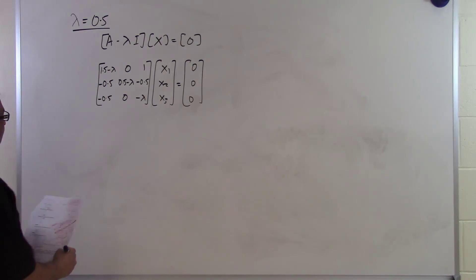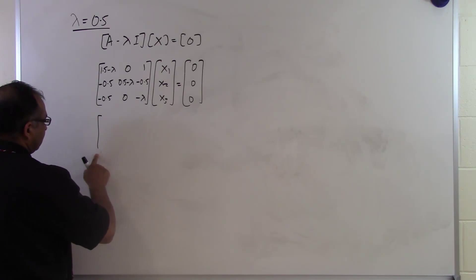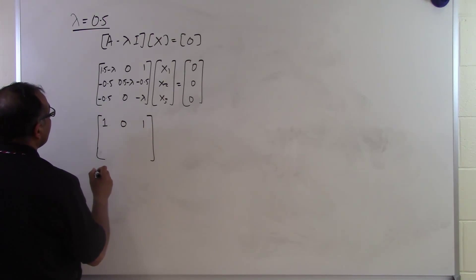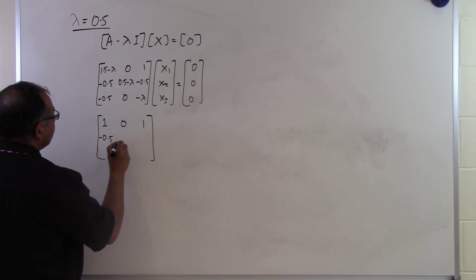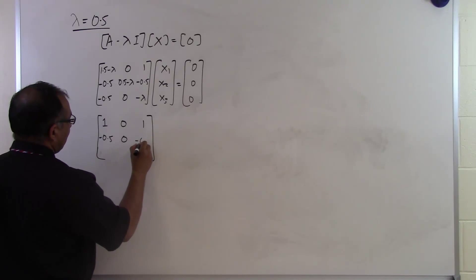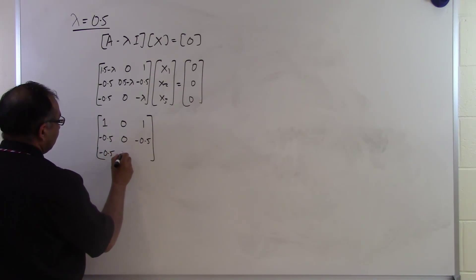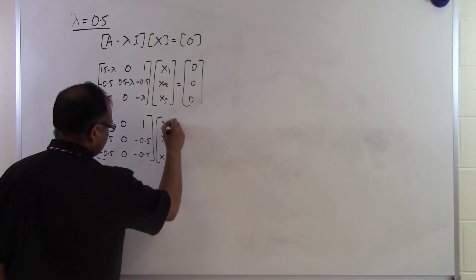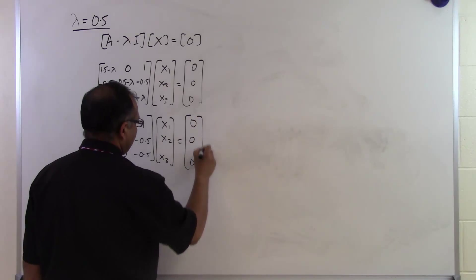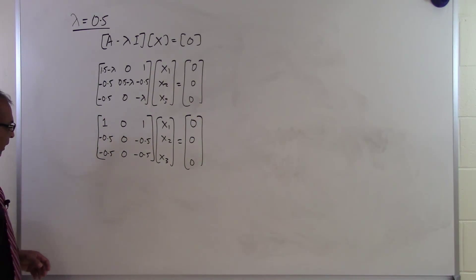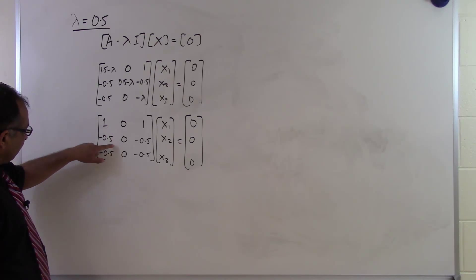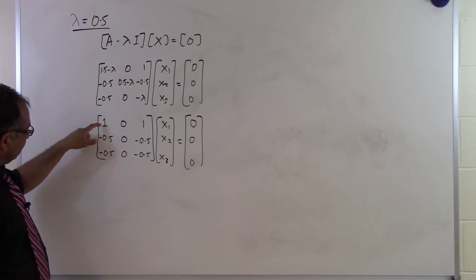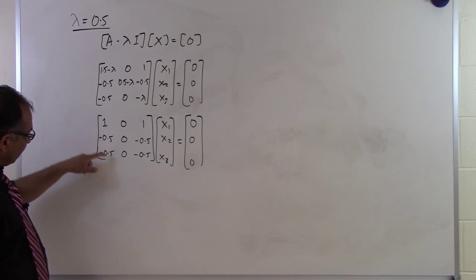When I put lambda equal to 0.5, A minus lambda I becomes: 1, 0, 1, minus 0.5, 0, minus 0.5, minus 0.5, 0, minus 0.5, times x1, x2, x3 equal to 0, 0, 0. You can see that the first equation is the same as the second equation — just multiplied by minus 0.5 — and the third row is the same as the second. So there is only one linearly independent row in this matrix.